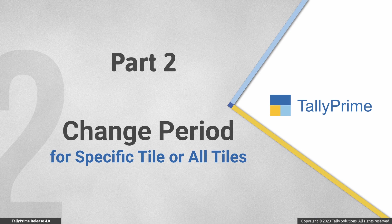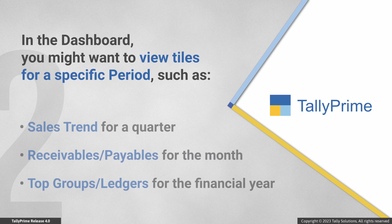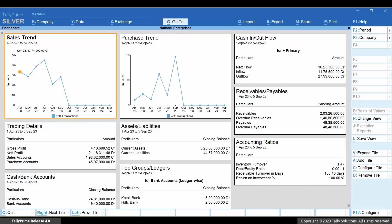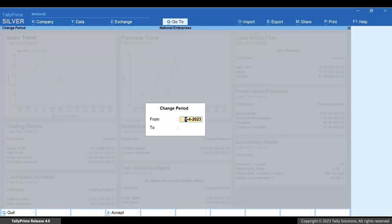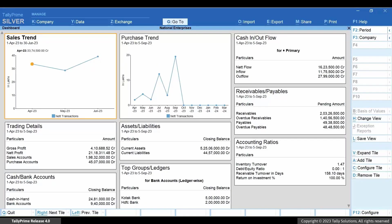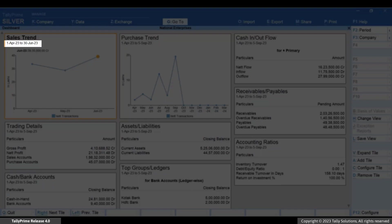Now let's see how to change the period of a specific tile or the entire dashboard. You might want to view the sales trend of a specific quarter, receivables or payables of the current month, and top groups or ledgers across the financial year. To change the period of a specific tile, move the cursor to the tile and press F2 or Alt+F2. Enter the From and To dates and press Enter. As you can see, the period of the tile is changed.